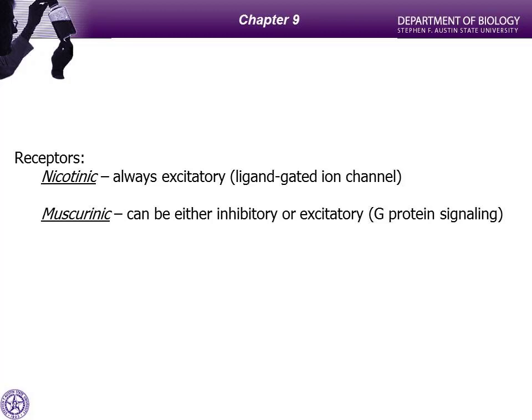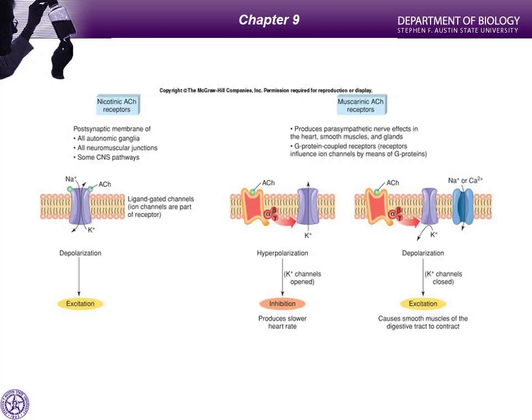The G protein can stimulate an ion channel to open — if it's a potassium channel, potassium goes out, causing hyperpolarization and an IPSP. Or in other tissues, the G protein may close the potassium channel or open additional channels for sodium and calcium, leading to an excitatory potential. Because of using G proteins, it depends on the tissue and the ion channel affected whether you get an EPSP or an IPSP, giving us extra control in cardiac and smooth muscle. Nicotinic receptors, by contrast, are found exclusively on skeletal muscle.